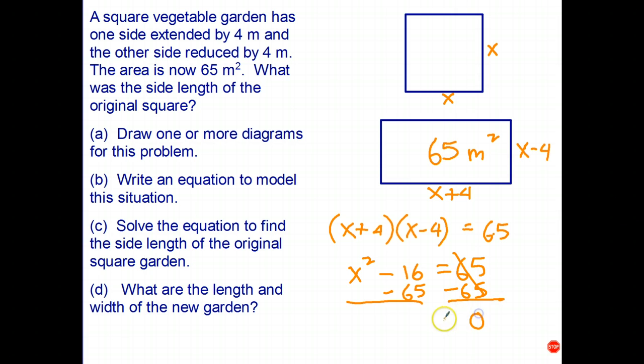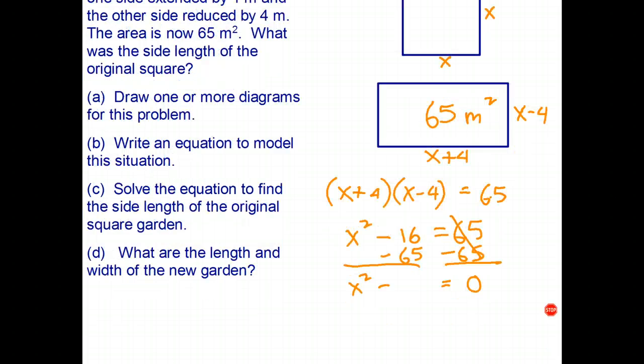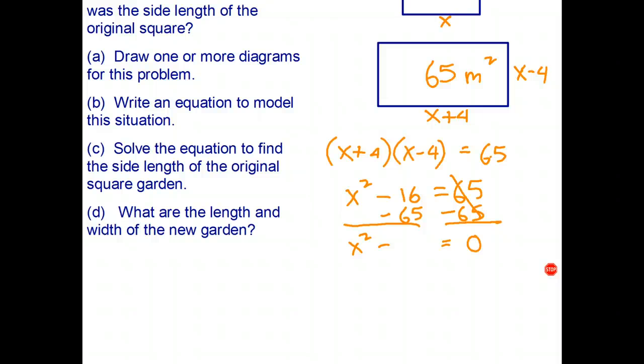That goes to zero. Here we end up with X squared minus sixteen minus sixty-five, which is X squared minus eighty-one equals zero.